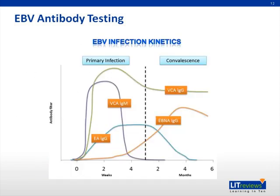Another way of looking at it is this graph, which demonstrates that for the first seven days there might not be any antibodies present. Then you quickly start to develop VCA IgM and VCA IgG. The IgM is going to disappear, the IgG is going to persist, and EBNA develops around week 10 and is present for life.